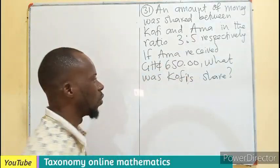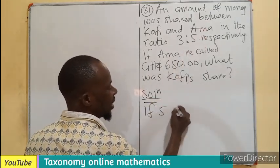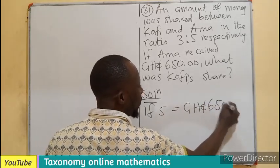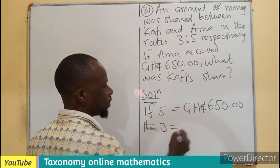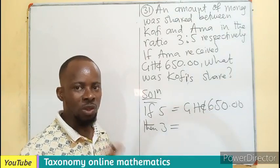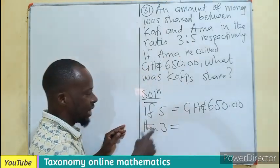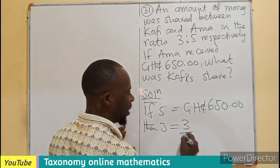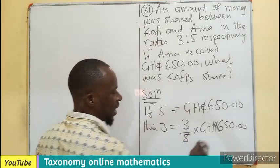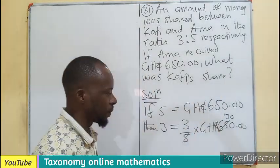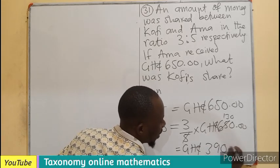There are 3 parts and there are 5 parts. Right away, if the part corresponding to Ama is 5, and 5 parts is producing an amount of 650 cedis, then the part corresponding to Kofi will be 3. If we share money equally and there are many parts — you are taking 5 parts, I am taking 3 parts — your money becomes more than mine. So if Kofi's amount is going to be less, 3 will be divided by 5, then we multiply by 650. 5 is a factor of 65, giving 13 times 3.